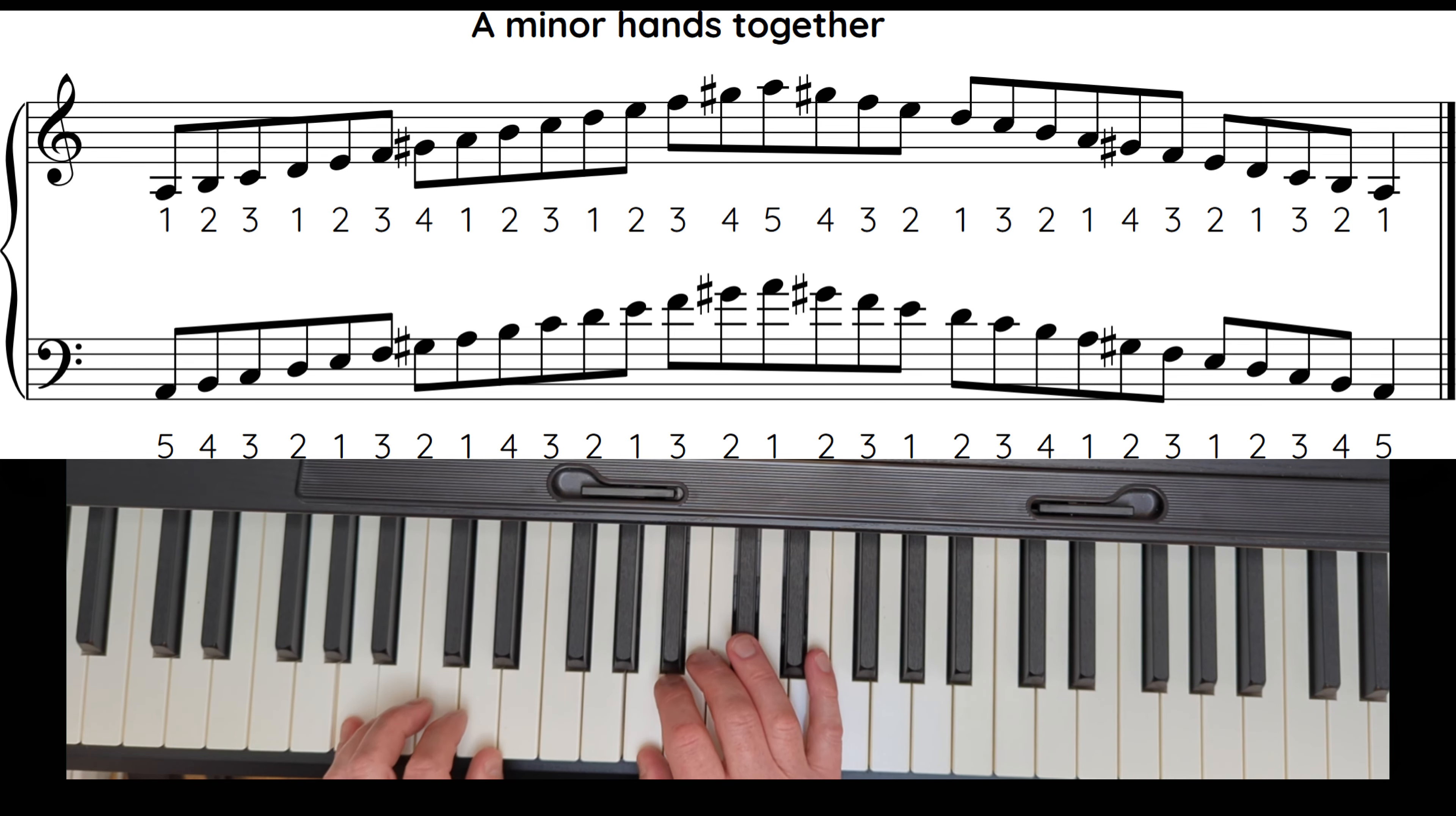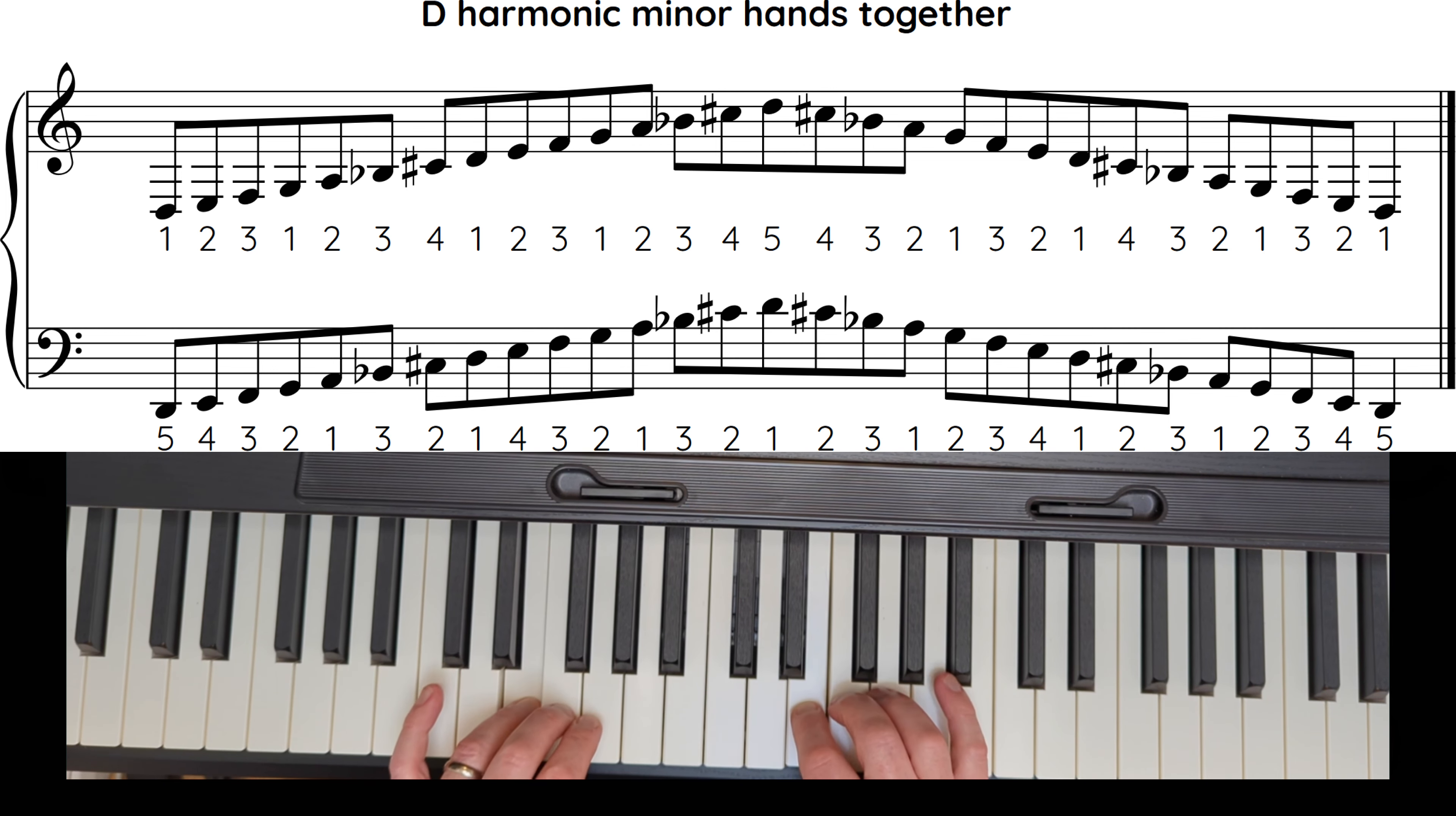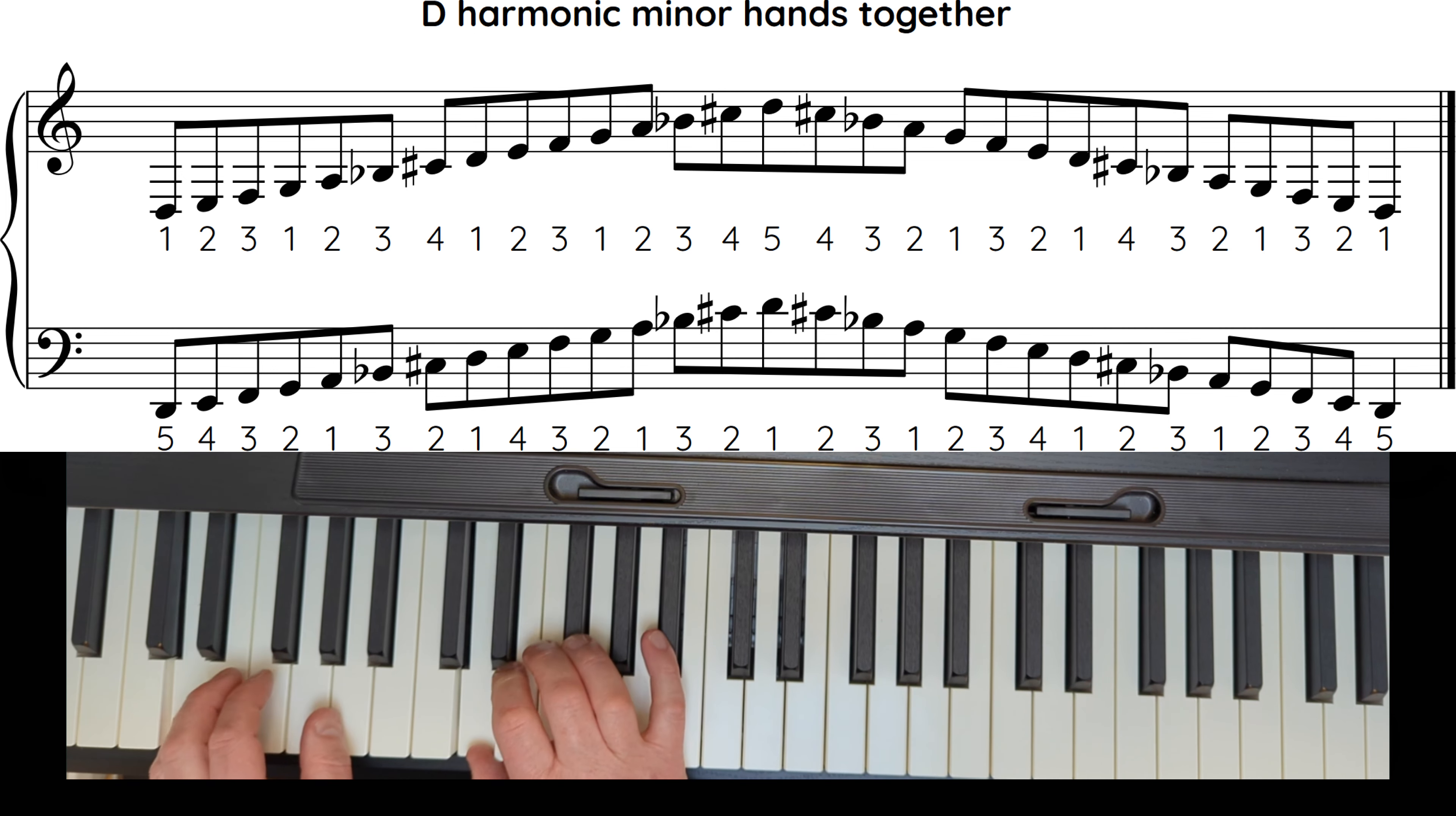Now D minor harmonic has a nice pattern: two black notes in a row. Here it comes again, guess what, same fingering. And left hand 3, here we go, two black notes in a row, nice pattern. Thumbs together, right hand 4, left hand thumb under. And that is D minor harmonic.